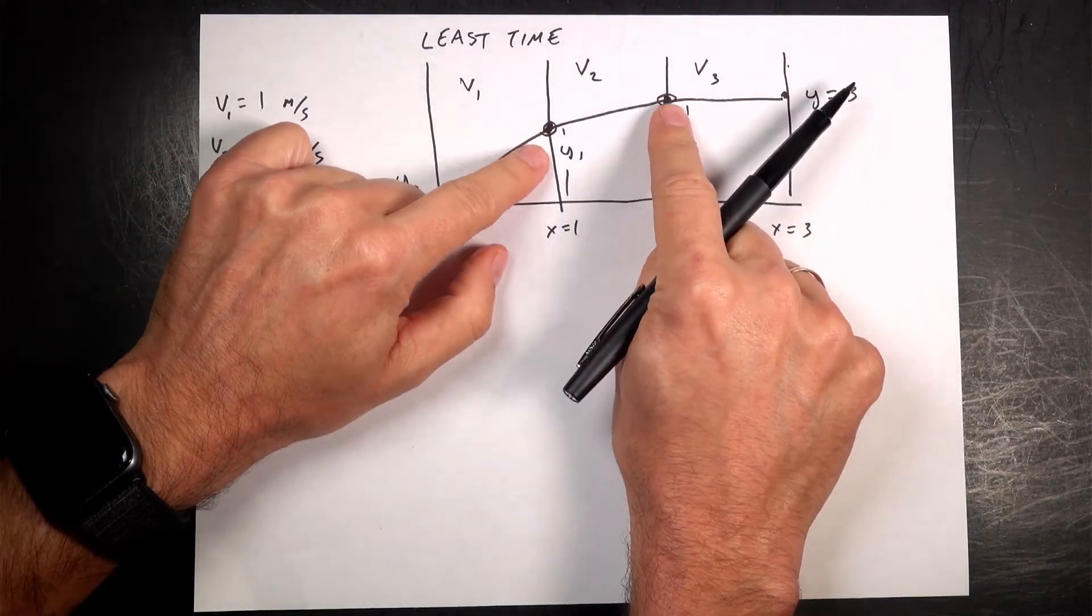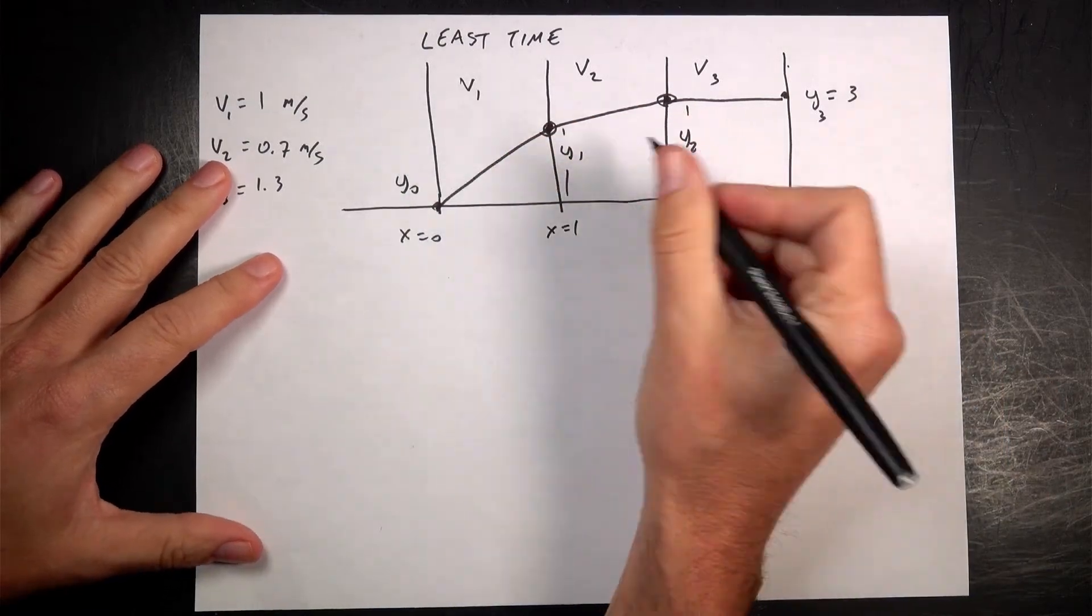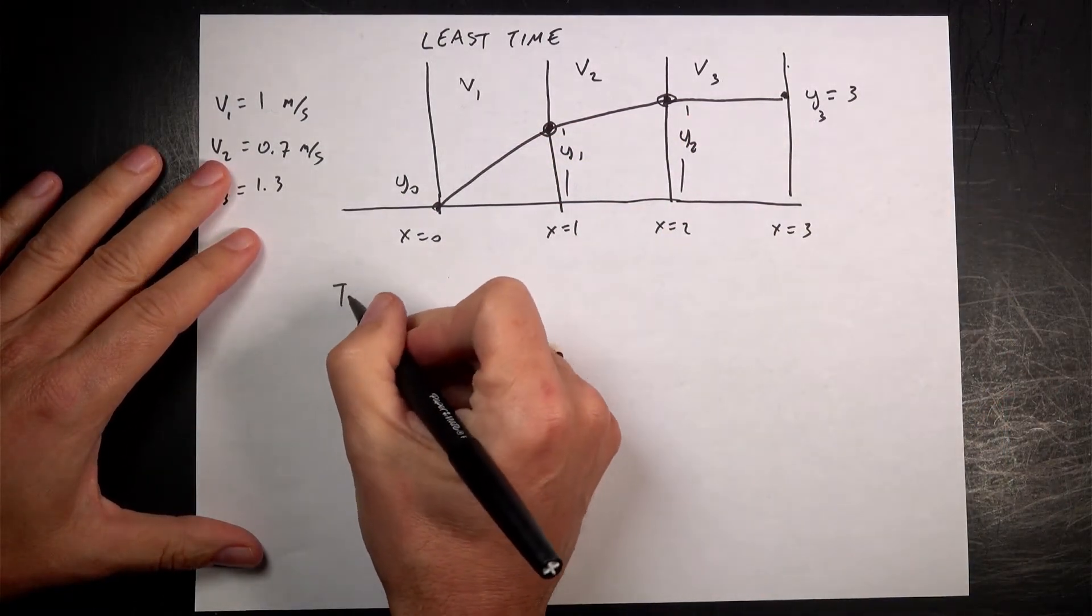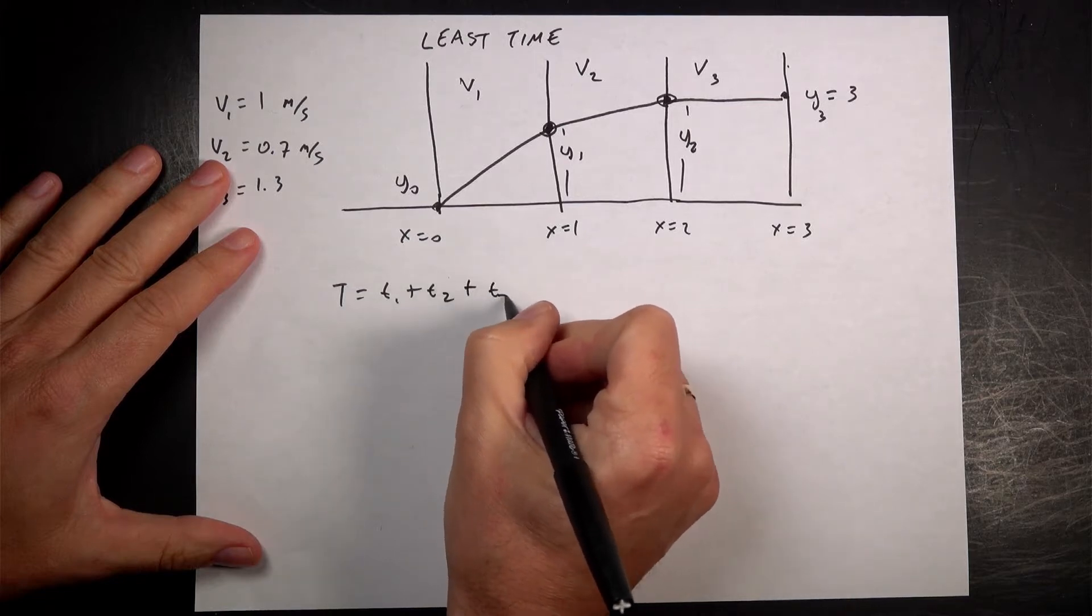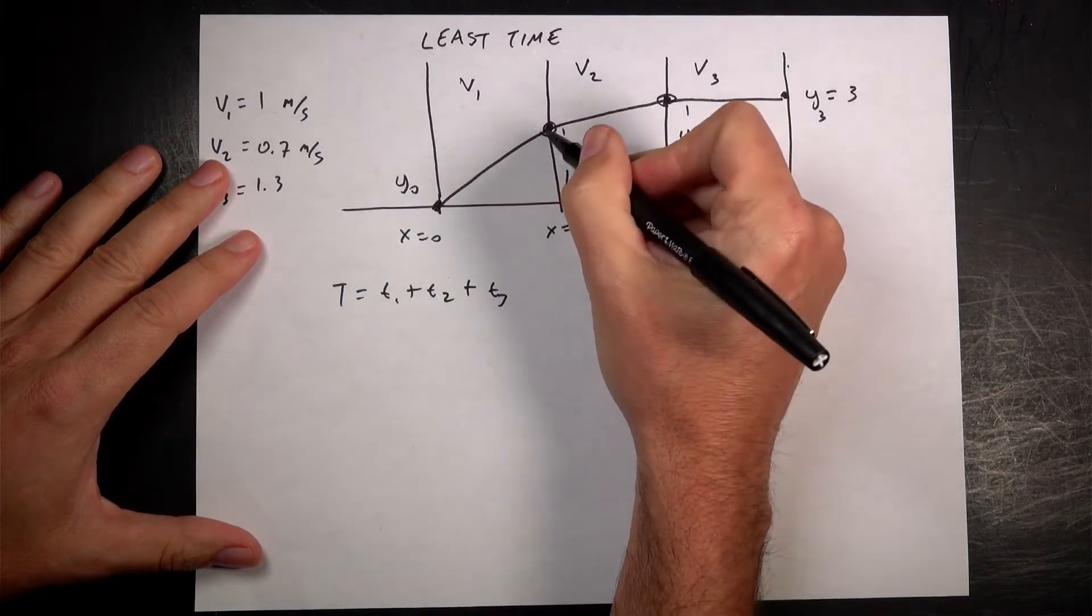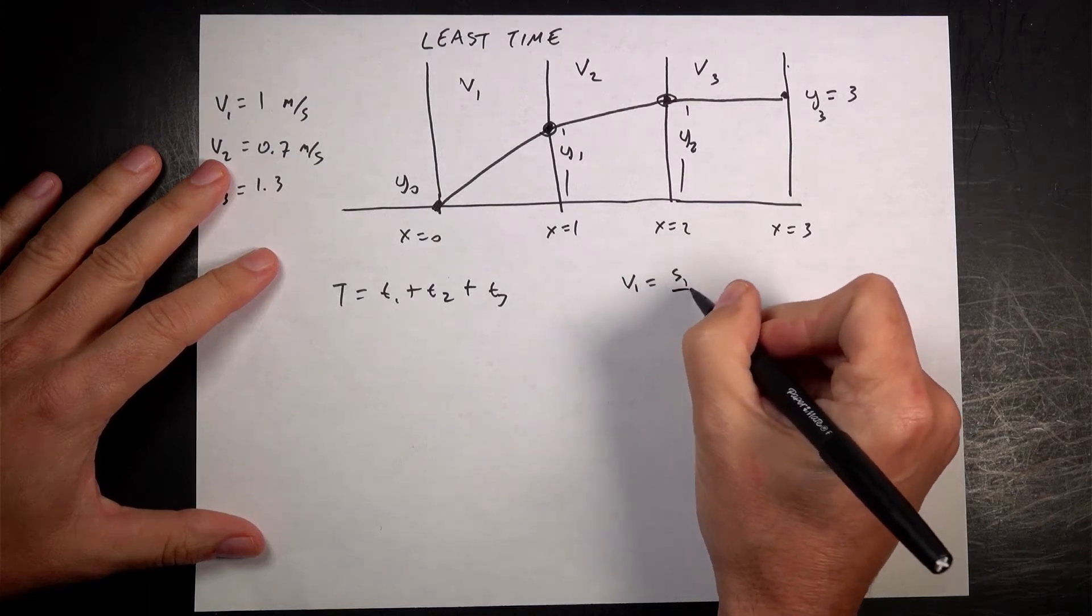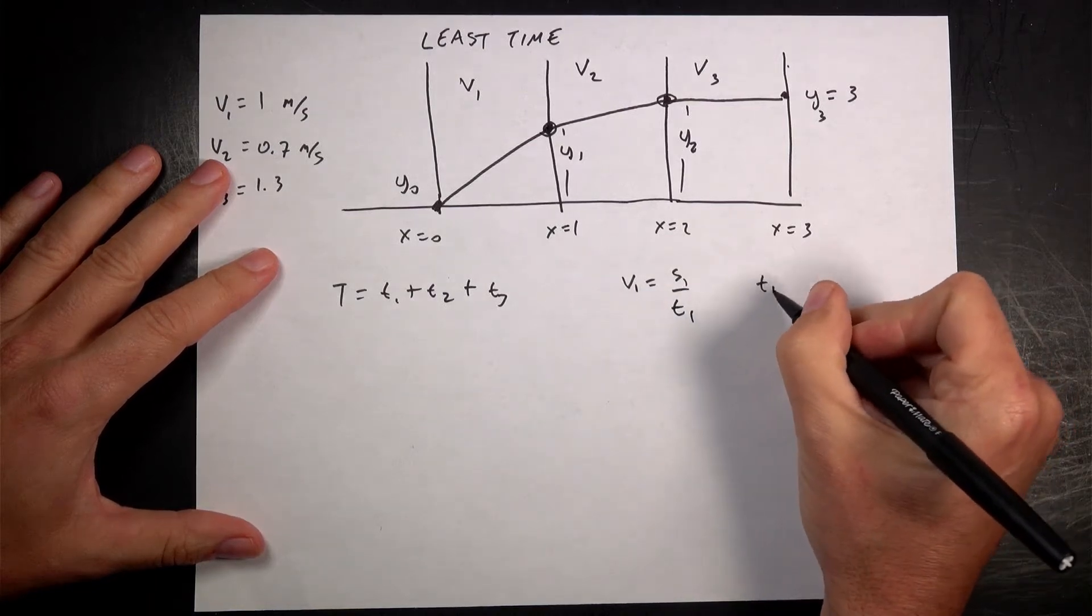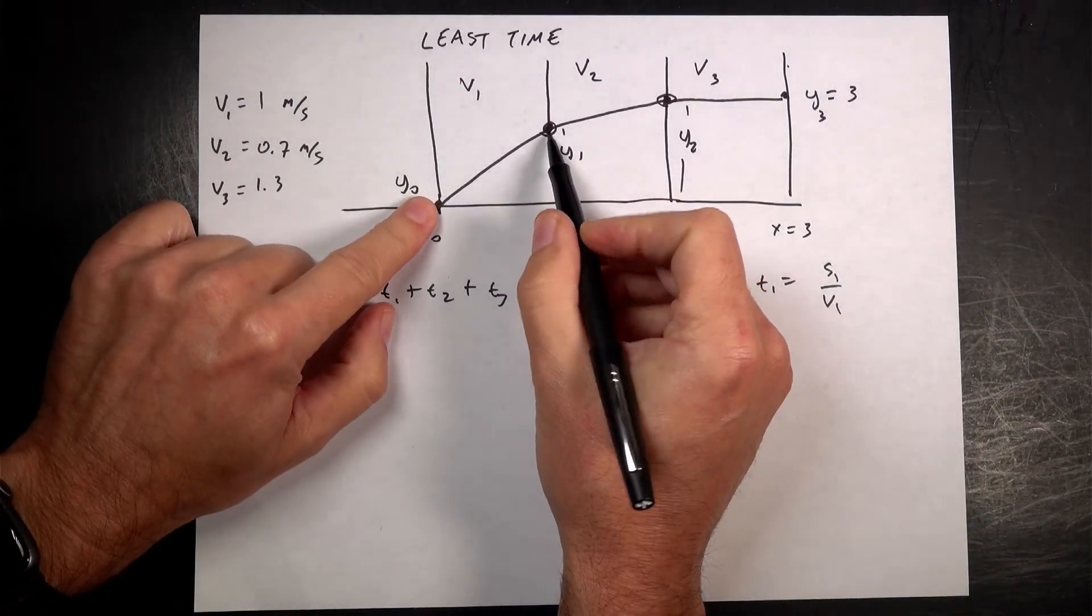So the question is, how do I know which way to move these? I can definitely calculate the time, right? I can say, okay, the total time, let's do that. T is going to be T1 plus T2 plus T3. And T1 is going to be this distance, so I can say V1 equals S1 over T1, or T1 equals S1 over V1. So what's this distance right here?